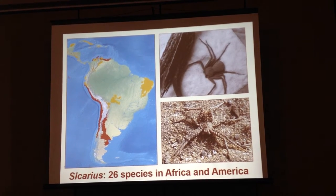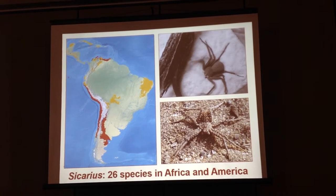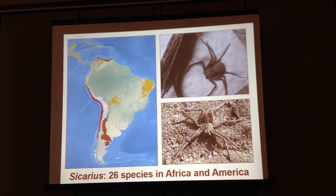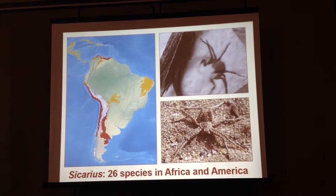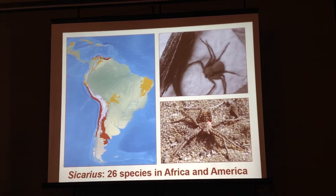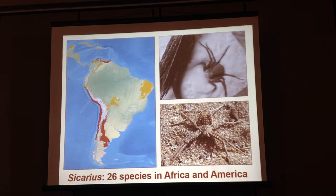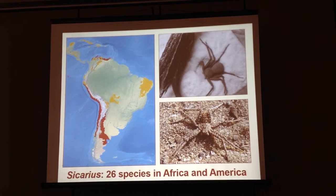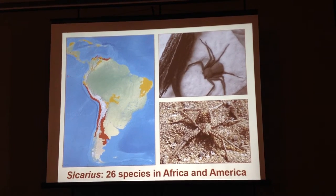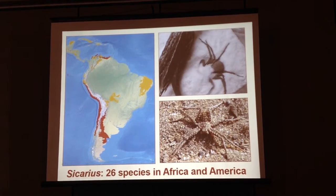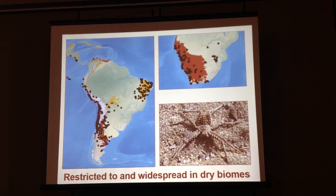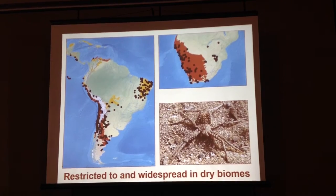I am an arachnologist and I am interested in the systematics of these very cute spiders. You can see that they hide themselves in the sand — they have even become famous from a YouTube video of the spider that couldn't hide. They are very nice spiders; they cover themselves with grains of soil, so the color you see is not actually the spider's color, it's just the sediment. They are not a very diverse genus — they have 26 species in Africa and America — but what interests us here is that they are restricted to and widespread in dry habitats. So they are an excellent model for investigating these questions.